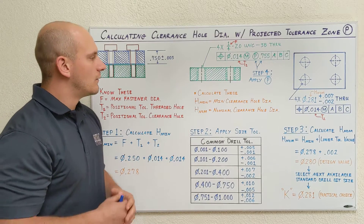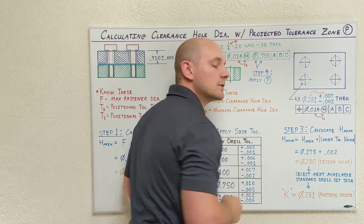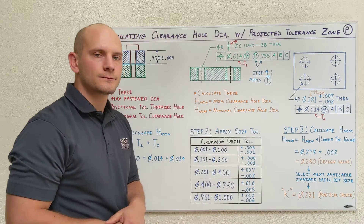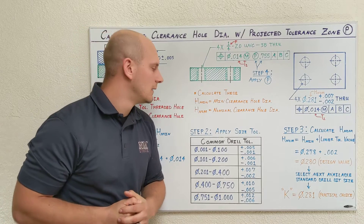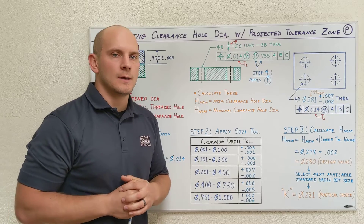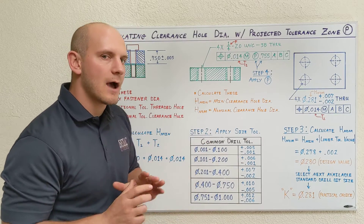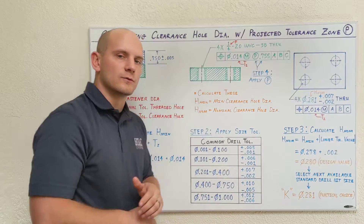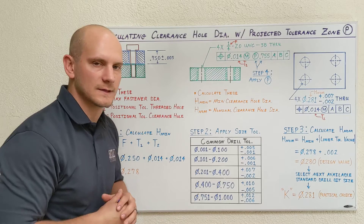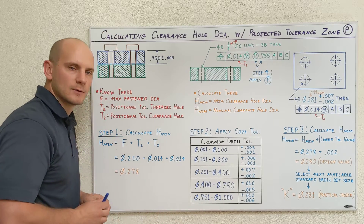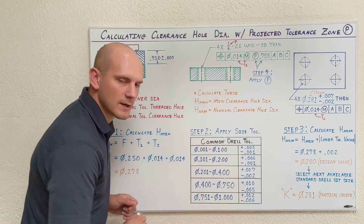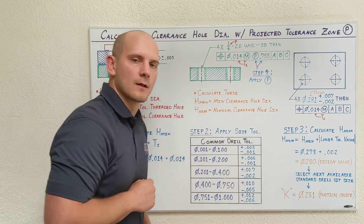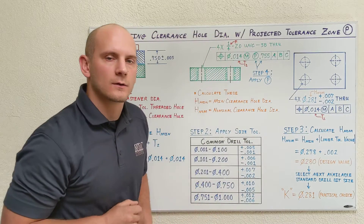Step two: we need to apply a size tolerance to those clearance hole diameters. There's a lot of mechanical design reference information out there, but I've compiled a table of low-cost, easily repeatable drill tolerances that a machinist can use. All you need to do is take your minimum clearance hole diameter and plug it into the appropriate range. 0.278 belongs right here between 0.201 and 0.400. Just take this low-cost drill tolerance and apply it to the clearance hole diameter size callout.